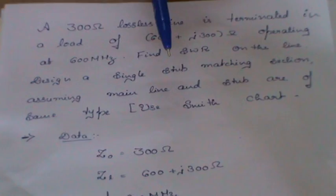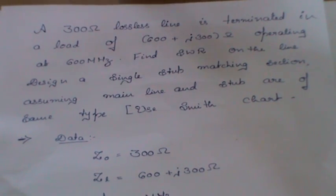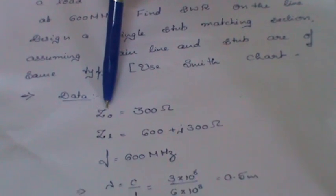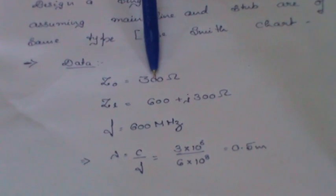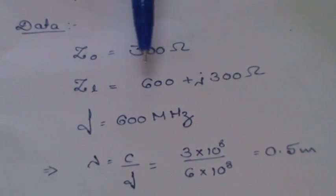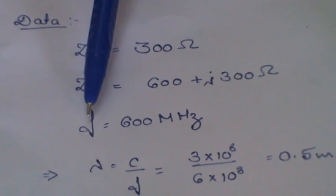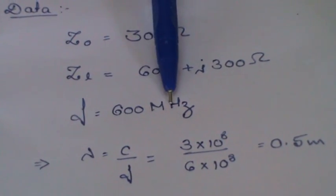Before going to the solving, let us see what are the given data. The characteristic impedance of the lossless line is 300 ohm, load impedance 600 plus j300 ohm, frequency of propagation 600 megahertz.